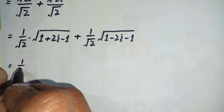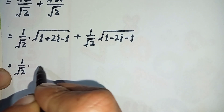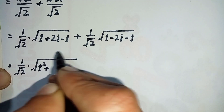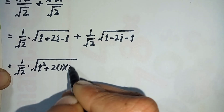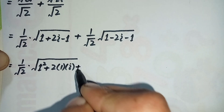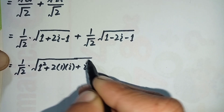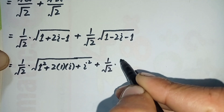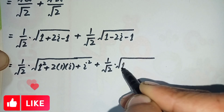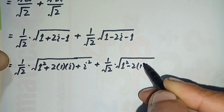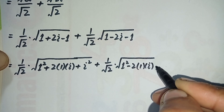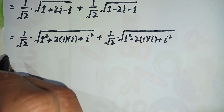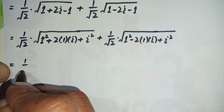We can rewrite further: one can be written as one squared, two iota as two times one times iota, and minus one equals iota squared, because by complex number identity iota squared equals minus one. Similarly for the second term: one squared minus two times one times iota, and again minus one equals iota squared.